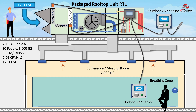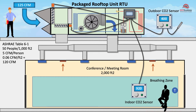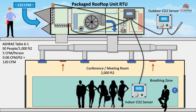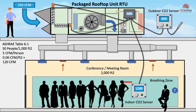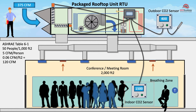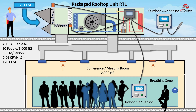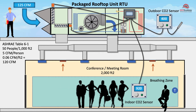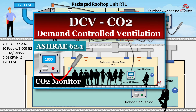Using a conference room as an example: if the meeting room was designed for 125 people, but only the presenter is currently in the room, the CO2 monitor would pick up the low quantity of carbon dioxide and close the outside air damper to match the occupant level. As more attendees arrive, the level of CO2 increases, the CO2 monitor picks up this increase and sends a command for the outside air damper to open wider, allowing more outside air into the space. As occupants leave, the system will begin to close the outside air damper. For a further explanation, see our video on demand controlled ventilation.